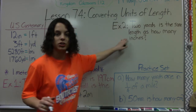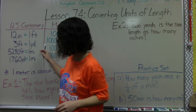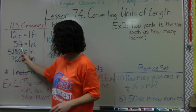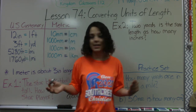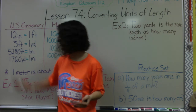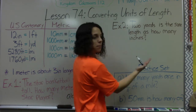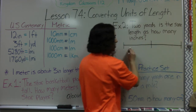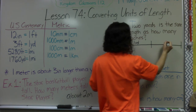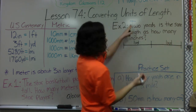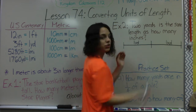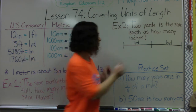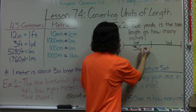For example 2: 2 yards is the same length as how many inches? We want to look at yards and inches in our conversion table, but they aren't next to each other. We know 12 inches is one foot, and if we have three feet, that's 36 inches. So there are 36 inches in one yard. I'm going to draw a picture — this is one yard and this is another yard, making two yards total. I want to figure out how many inches are in two yards. There are 36 inches in one yard because 12 times 3 equals 36.